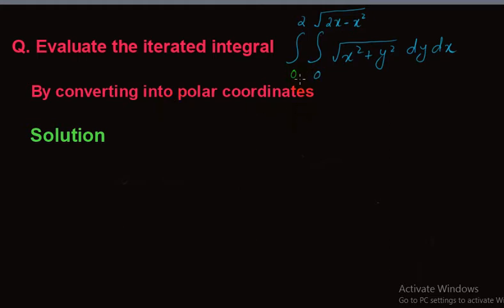In this particular question, x varies from 0 to 2, variation of y is from 0 to the square root of 2x minus x squared, and f(x, y) equals the square root of x squared plus y squared.